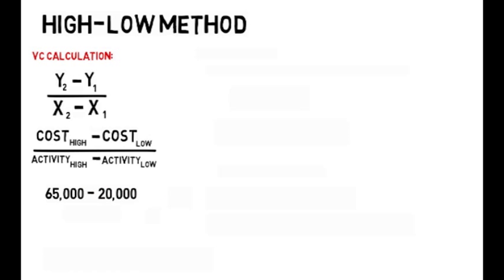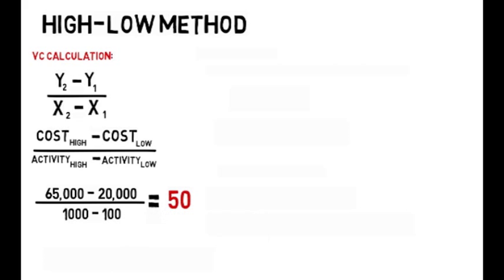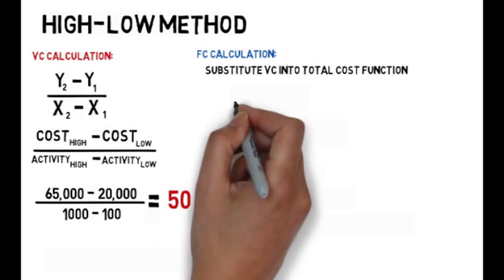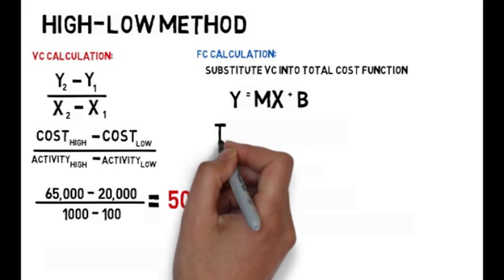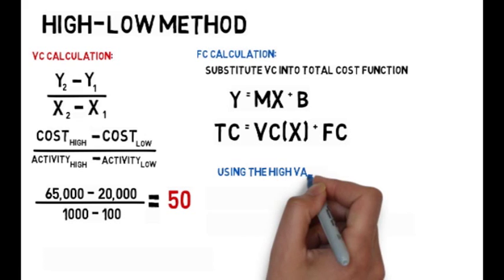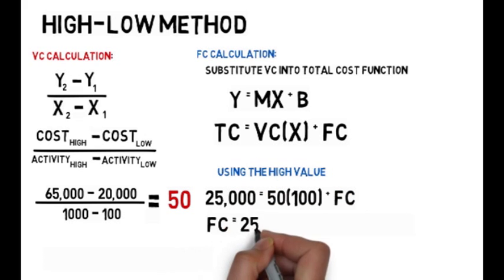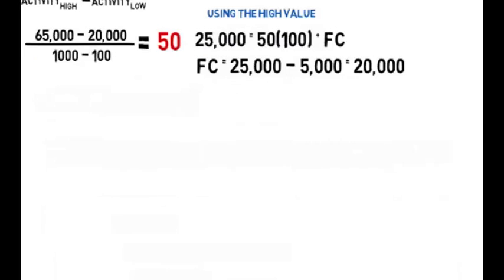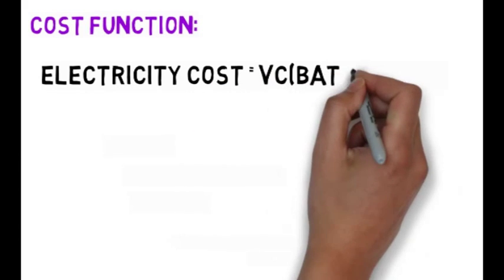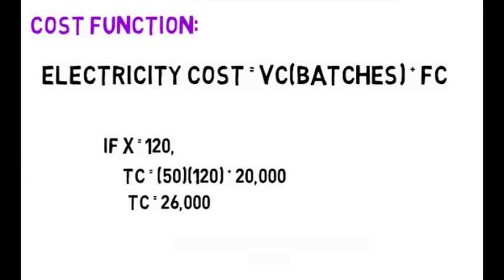Using the high-low formula, the impact of the cost driver is calculated. In this scenario, for each batch produced, $50 is incurred for electricity expenses. This variable cost is then substituted into the linear equation to find the y-intercept, which is the fixed cost, amounting to $20,000. In the following month, Bob plans on producing 120 batches of cookies, which means his estimated electricity costs will be $26,000.